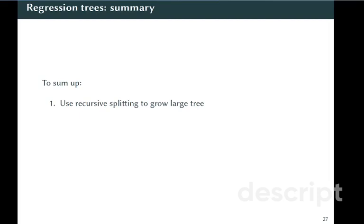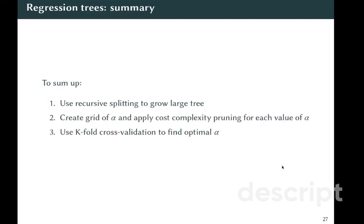So to sum up, we first use recursive splitting to grow a large tree. Then we create a grid of alpha and apply cost complexity pruning for each value of alpha. For each value of alpha we get our optimal subtree.